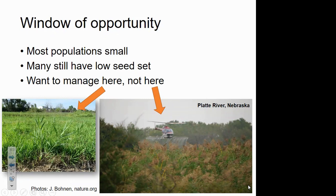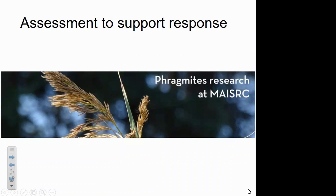Because most populations are quite small and we're not yet seeing seed set in all of them, we argue there is a window of opportunity for coordinated strategic response. We want to manage these early, incipient populations — where there is potential for effective control with low non-target impacts — rather than waiting until we have really extensive infestations like those along the Platte River in Nebraska, which have required large-scale control efforts.